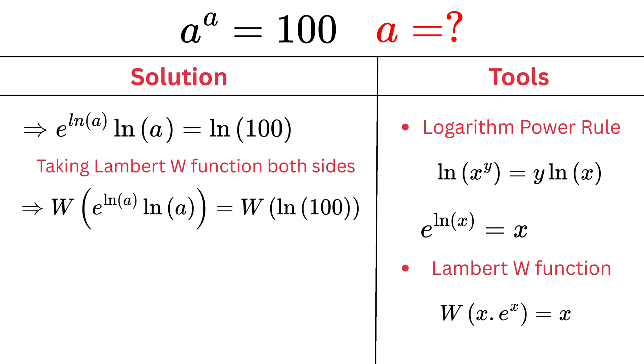From the property of the Lambert W function, we know that Lambert W of e raised to the power x times x equals x. That means the left-hand side simplifies to natural log of a equals Lambert W of the natural log of 100.